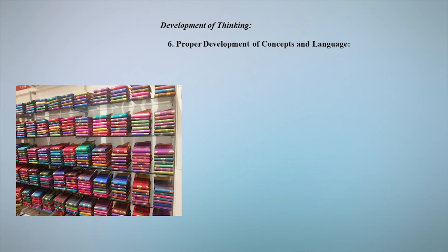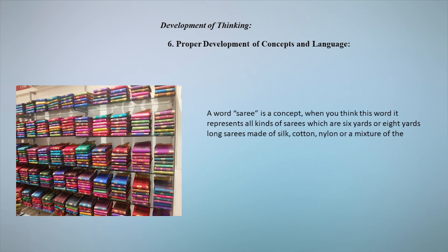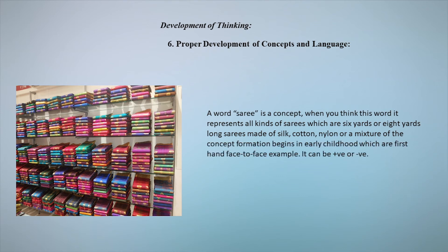The other important aspect is the proper development of concept and language. A concept is a word or idea with a generalized meaning which represents an entire class of objects, ideas or events. For example, the word 'sari' is a concept representing all kinds of saris — six or eight yards long, made of silk, cotton, nylon or mixtures. Concept formation begins in early childhood and can be positive or negative.